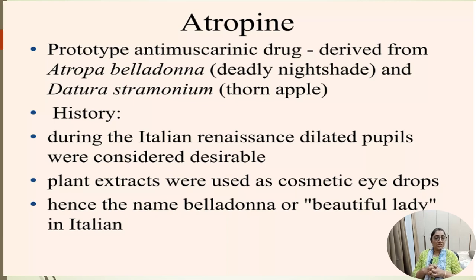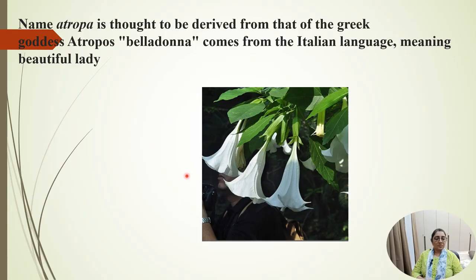Atropine is the prototype of anticholinergic drugs. It was used in the Italian Renaissance to dilate the pupil, which was considered a sign of beauty — it was instilled into the eye for this purpose. The name comes from the flower of Atropa belladonna; 'Atropa' is derived from the Greek goddess, and 'belladonna' comes from the Italian language meaning 'beautiful lady.'